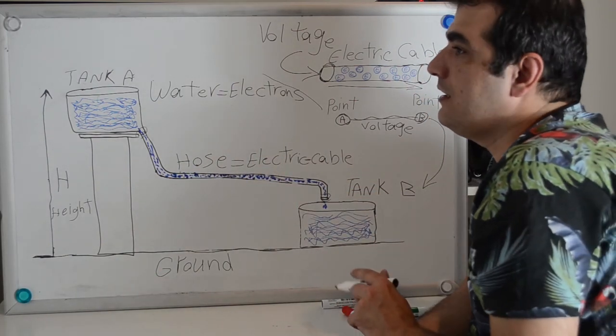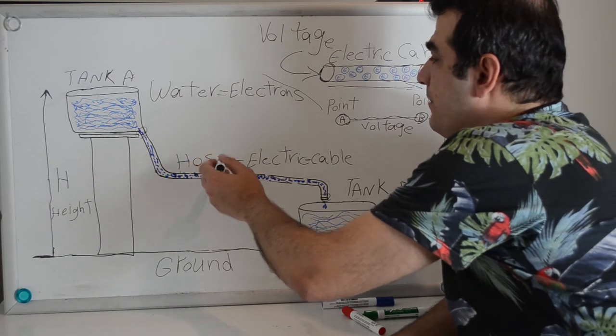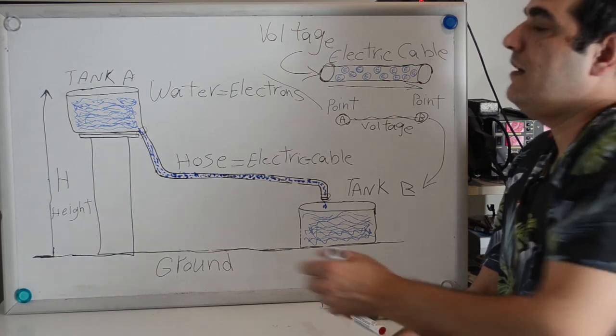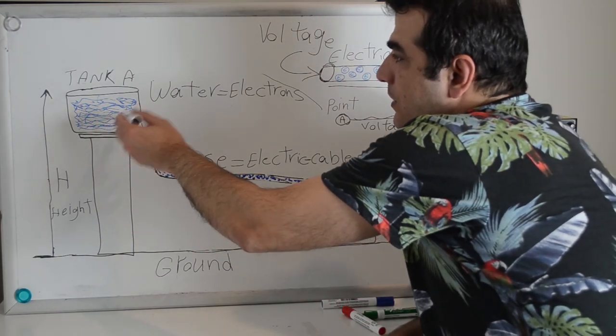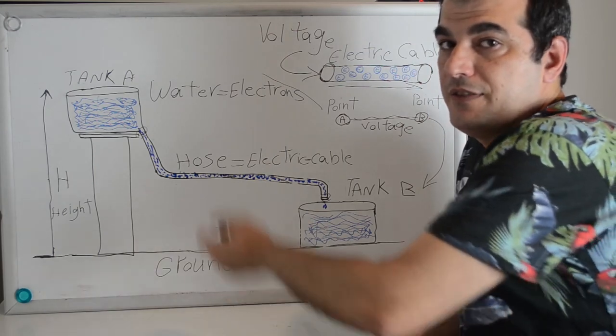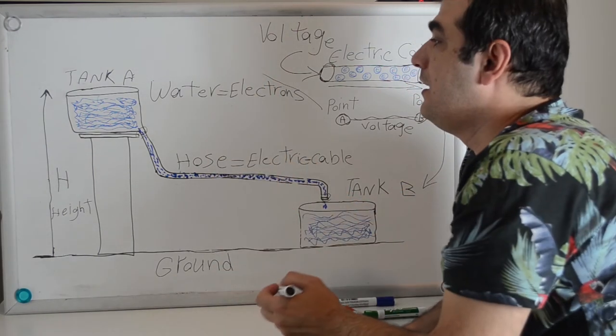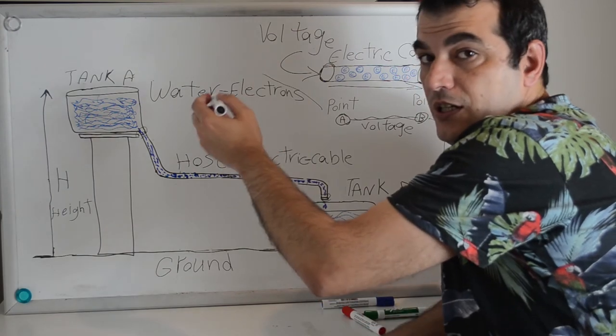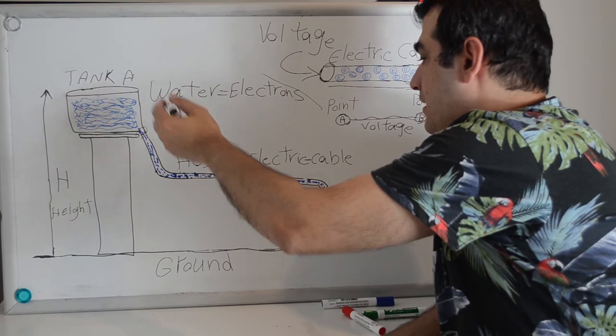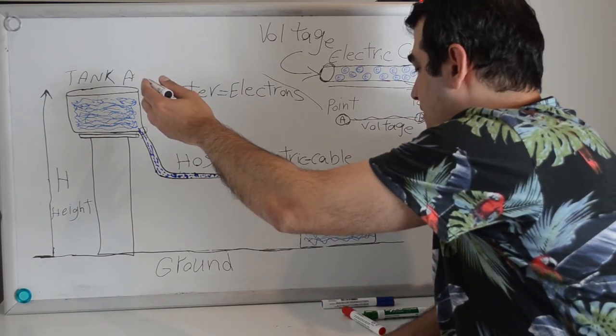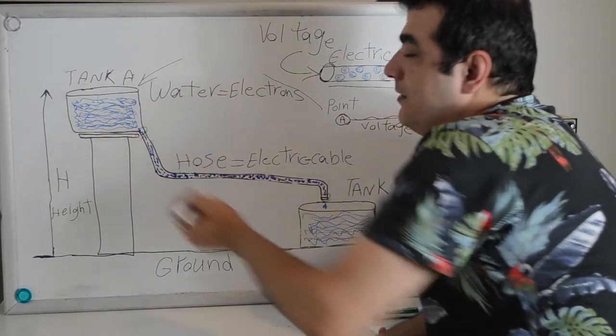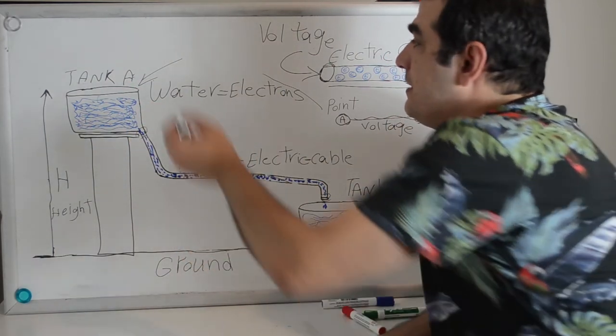Under this condition, water flows from Tank A to Tank B. Water inside Tank A, because of the height difference, has pressure that causes the water to move from that side to this side. This pressure is the same as voltage.